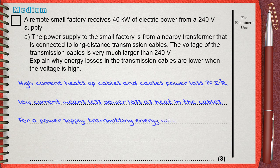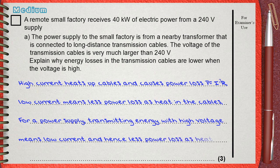This is the mathematical formula of the power loss in the cables. Low current means less power loss as heat in the cables.